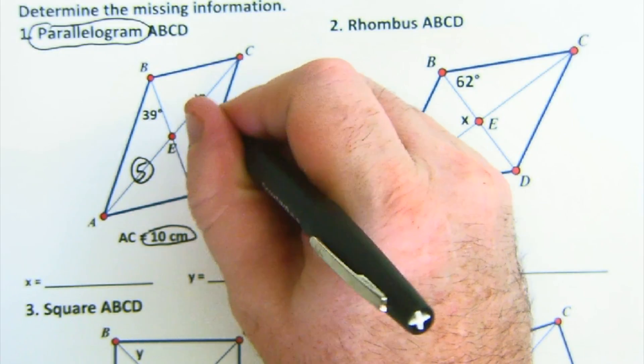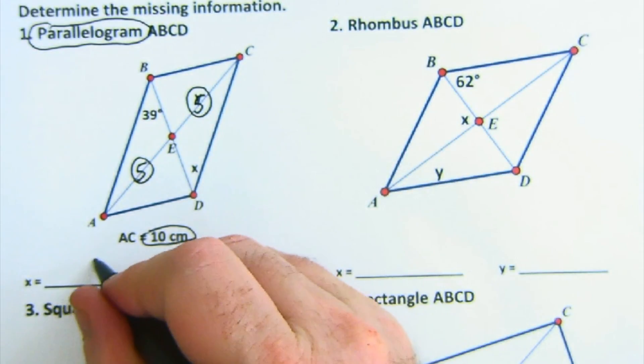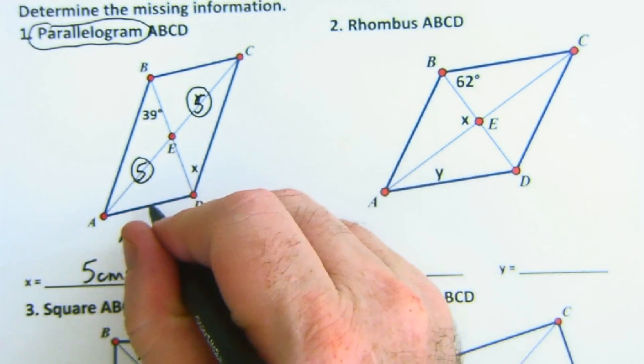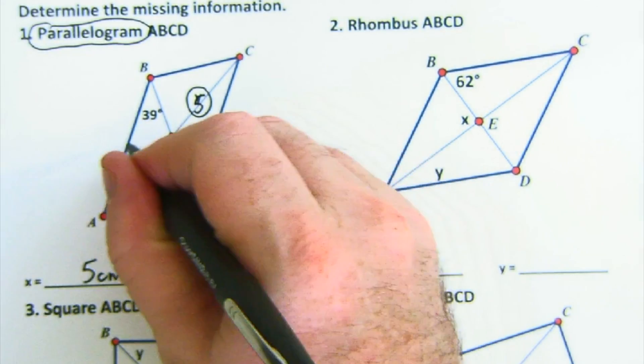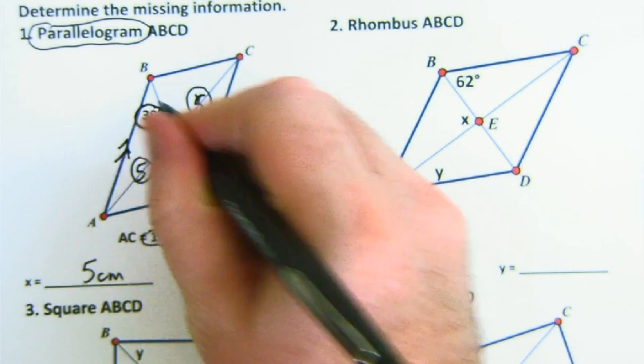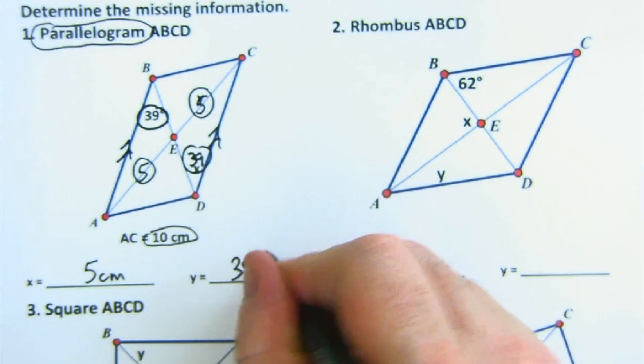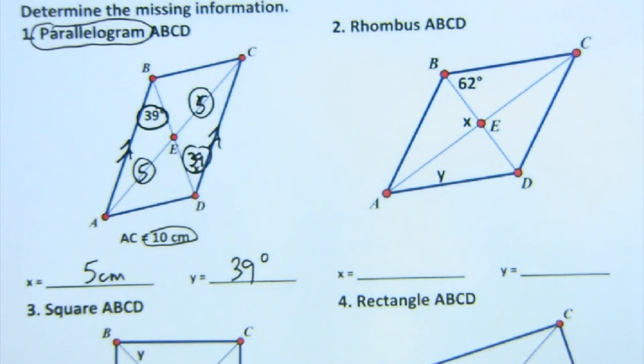I'm also aware that opposite sides are parallel and so this angle of 39 would exactly be this angle of 39 and so on. Again, using properties from the shape.